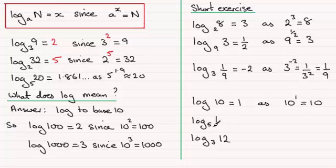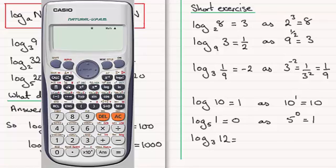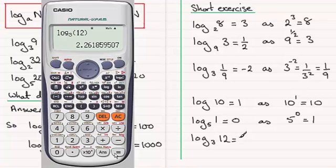What's the log of 1 in base 5? What do we have to raise 5 to in order to get 1? The answer is the power 0 — anything to the power 0 is 1 — so the log of 1 in any base is always 0. For the last one, the log of 12 in base 3, you need the calculator. Pressing the log button in base 3 of 12 equals 2.261 and so on — so to one decimal place, that's 2.3.